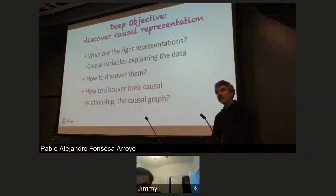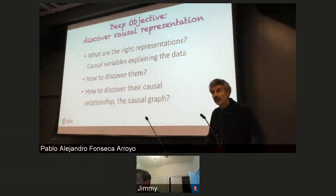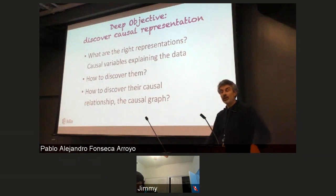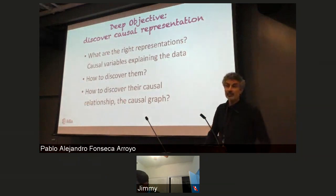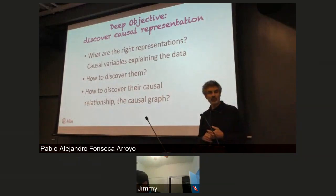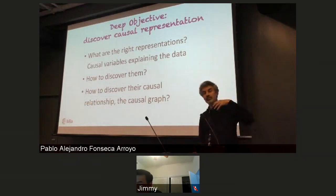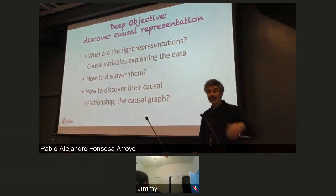As you know, deep learning has always been about really learning representations, and a good representation. The idea we've had for a long time was that we have several levels of representation. The high levels of representation correspond to abstract concepts that allow us to really understand the world and explain things in the world, and in particular, the kinds of notions that we communicate with language should be represented at a high level.